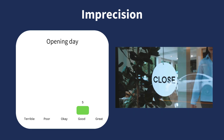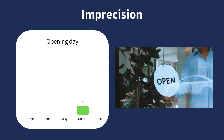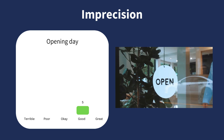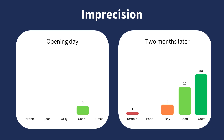The second item is imprecision. Imprecision is when you don't have enough information to be sure about the results. Here's an example where there are only a few ratings of a restaurant on opening day. With only one day and a few ratings, it's difficult to be sure about how good the restaurant actually is. Compare this to having many more ratings two months later — with more information, you can be more sure that the restaurant is probably good or even great, and you have more precision.